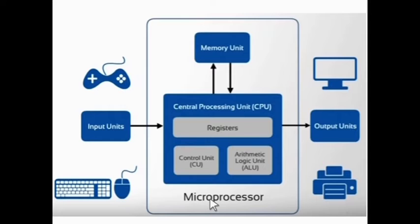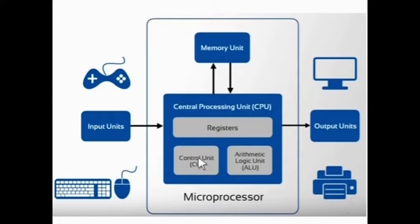Microprocessor: an integrated circuit that contains all the functions of a central processing unit of a computer. The heart of the microprocessor is called the central processing unit, CPU. The CPU consists of a set of registers, control unit, and arithmetic logic unit. The CPU also has certain memory units and a bus unit interface, all packaged together to form a microprocessor.